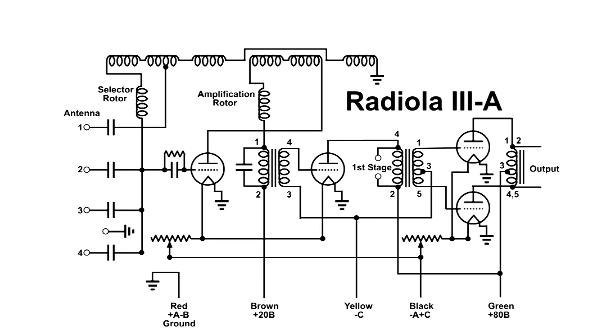This is the wiring diagram of a Radiola 3A, and it is a regenerative circuit. It doesn't matter which antenna input I use, so I'm just going to use number 2.